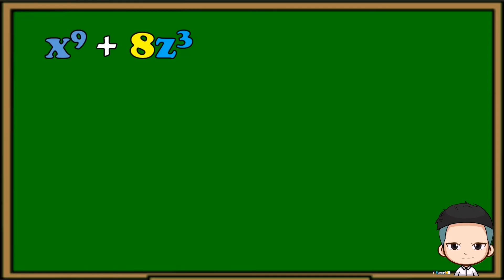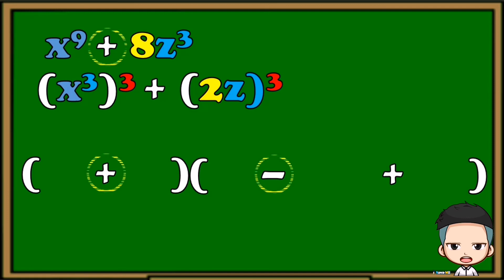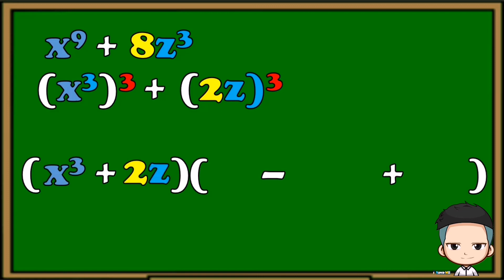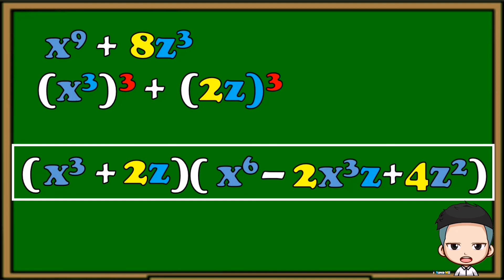For the last example: x⁹ + 8z³. x⁹ is a perfect cube and 8z³ is a perfect cube, and since the operation is addition, this is an example of sum of two cubes. Put the two terms in their cube forms, then prepare the parentheses with the correct operations. Copy the base of the first term and the base of the second term, then square the base of the first term, multiply the bases together, and square the second term's base. The final answer is (x³ + 2z)(x⁶ − 2x³z + 4z²). That's how we factor using sum and difference of two cubes.